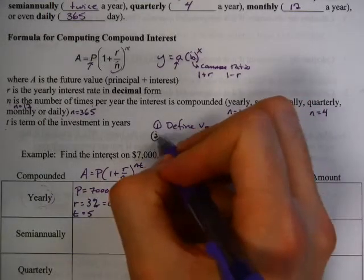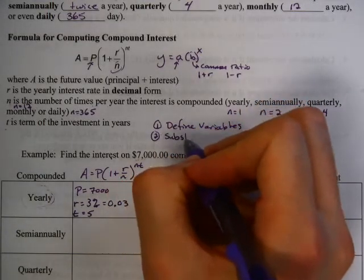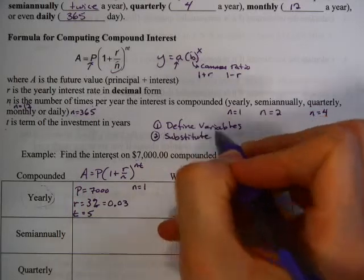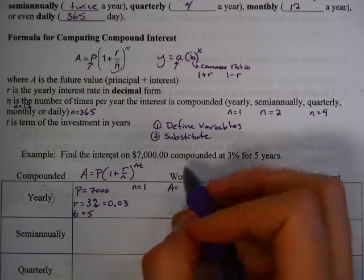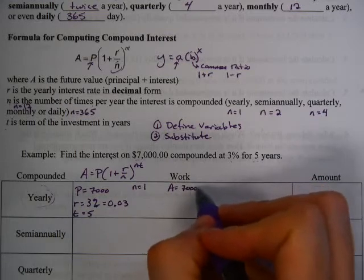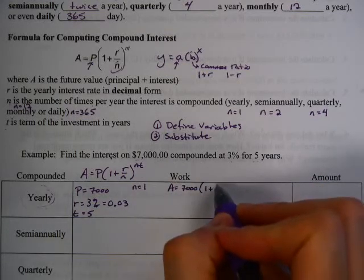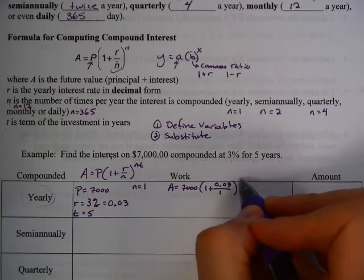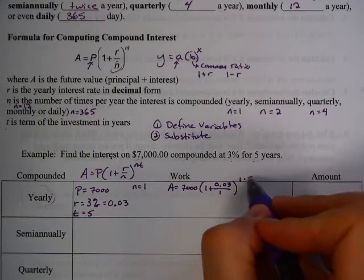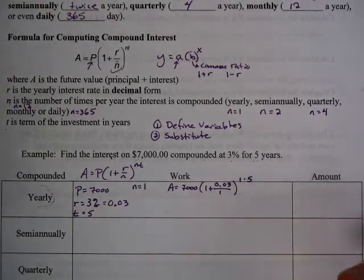Well, the second step is to substitute all your variables into your formula. So A is equal to 7,000 times 1 plus the rate, which is 0.03, divided by n, which is 1, raised to the n times t power, 1 times 5 power.